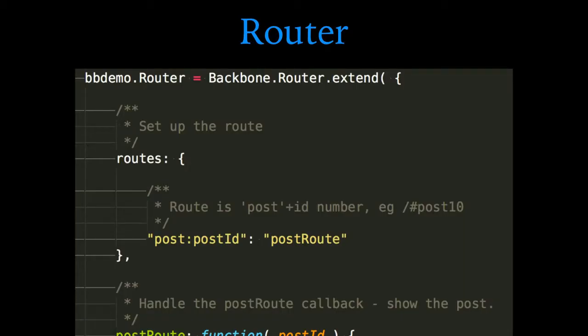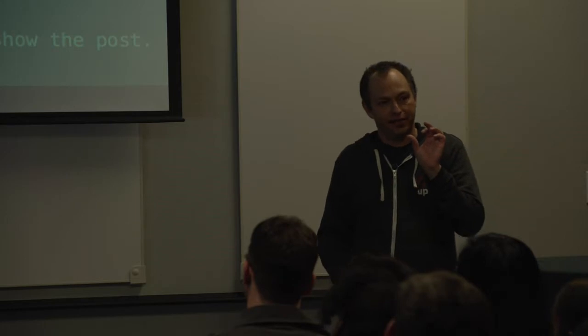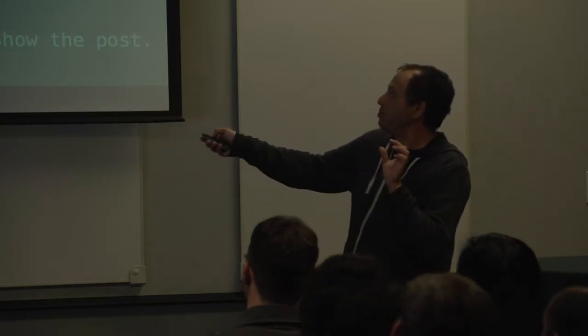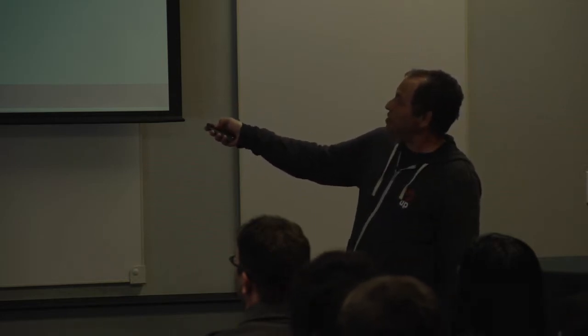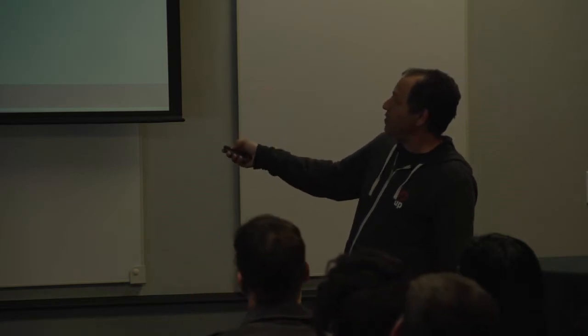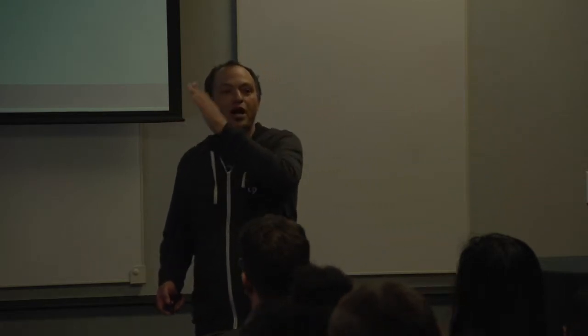Here's the router — this handles the routes. If you go to the URL and type #post/17, it's going to load post 17. The hash is assumed — that's the default Backbone uses. This is just the word 'post', and then colon-postID represents a variable — it could be anything you want to pass there — and that gets passed through to the postRoute function. The router takes that ID out of the last part of the URL and passes it to this function, which creates a new post view and refreshes it with that ID. I did slightly modify the sync method so instead of always hitting /posts/1, it hits whatever ID you pass to it.